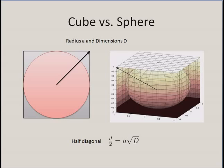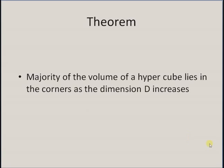And as d becomes larger, for a high-dimensional hypercube and sphere, the relation is d/2 = a*sqrt(d). So the theorem is that the majority of the volume of a hypercube lies in the corners as the dimension d increases. That is, as d becomes larger and larger, the difference between the length of the half diagonal and the radius becomes very large — the half diagonal is very large compared to the radius. In the next section, I will demonstrate the mathematical proof for this theorem.